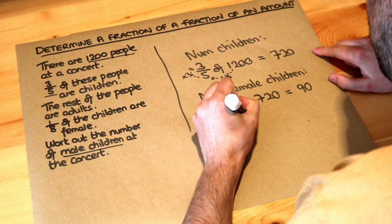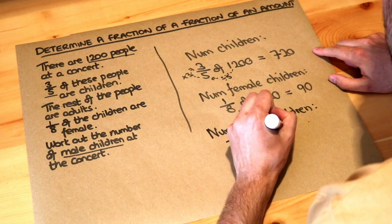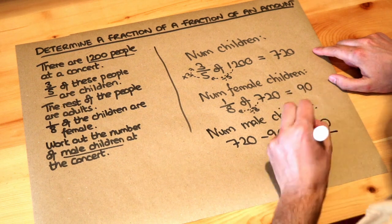So the number of male children is 720 minus 90 and that gives you 630 and that's the final answer.